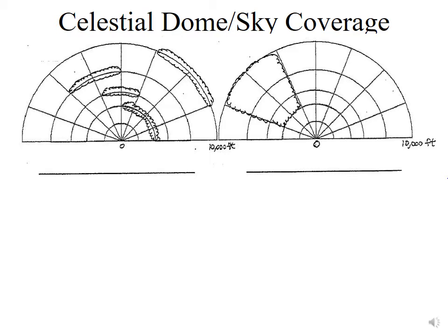Here we're going to introduce the celestial dome as a way to actually calculate sky coverage. We have a radial plot with zero at the origin and radial demarcations every 2,000 feet, so we're looking from zero to 2,000, 4,000, 6,000, 8,000, all the way up to 10,000 feet above ground level. The sky is divided into eight quadrants, each representing one-eighth of the entire sky — a two-dimensional representation of a three-dimensional view.